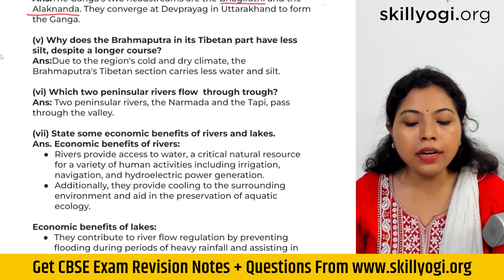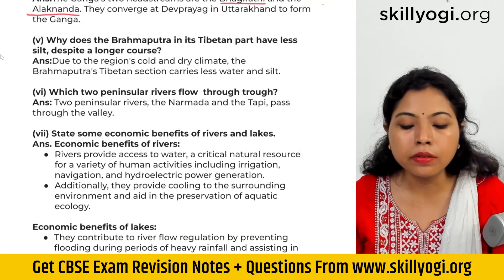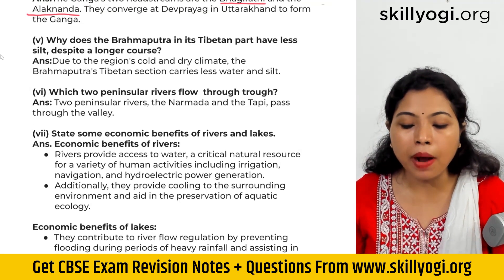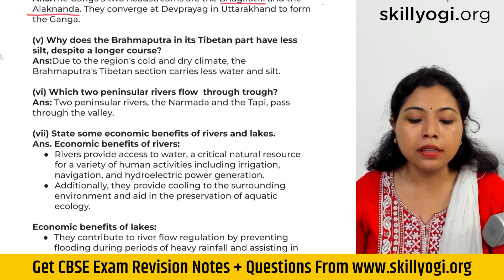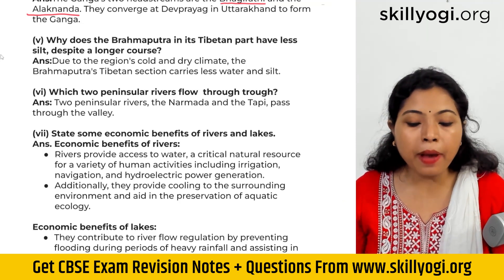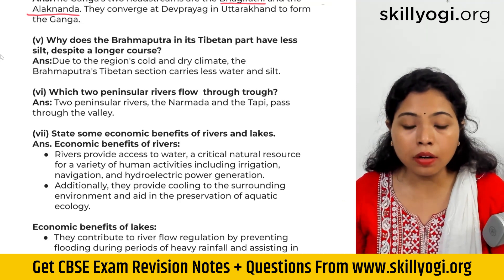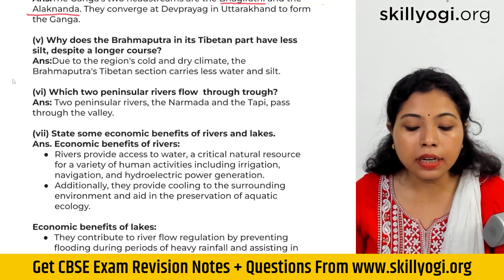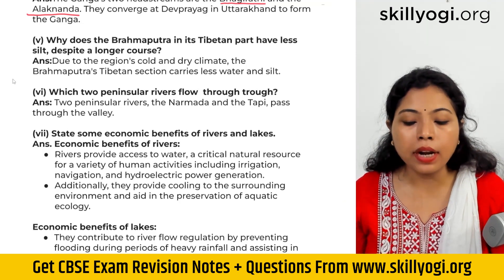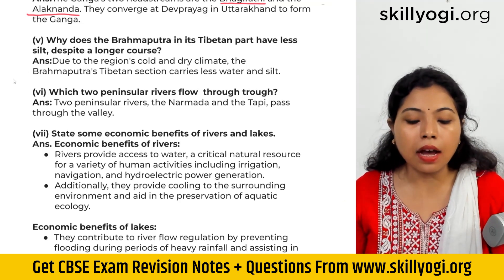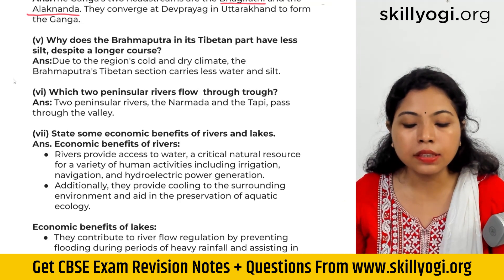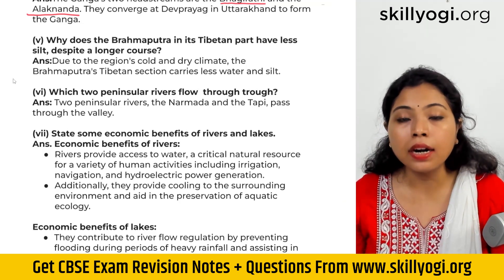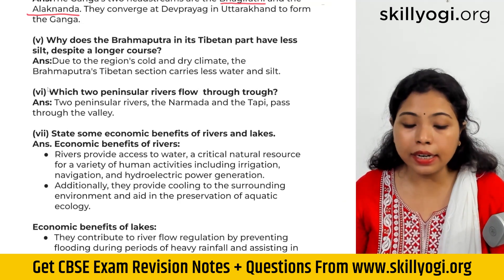Next question: why does the Brahmaputra in its Tibetan part have less silt despite a longer course? Answer: due to the region's cold and dry climate, the Brahmaputra's Tibetan section carries less water and silt.